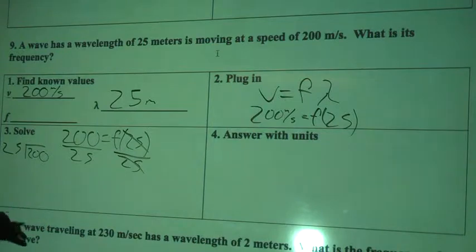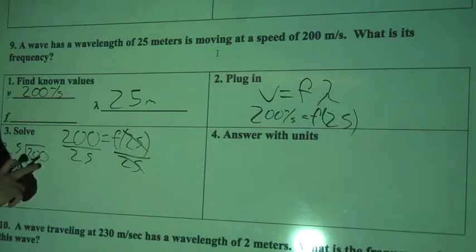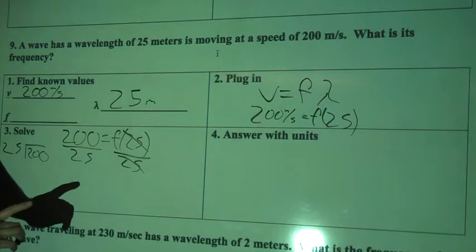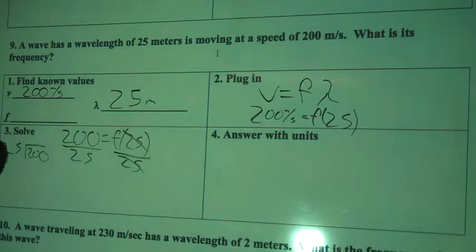OK, this is actually a pretty easy problem. So 25 can't fit into 20, but 25 can fit into 200. And I know 25 times 4 is 100. So 25 times 8, twice that would be 200, so 8.